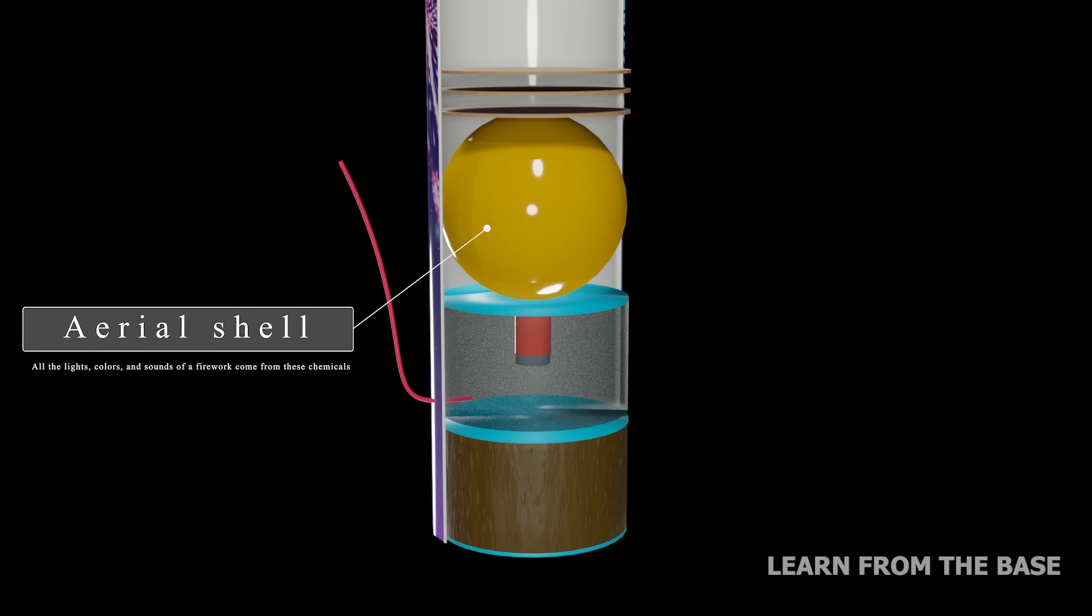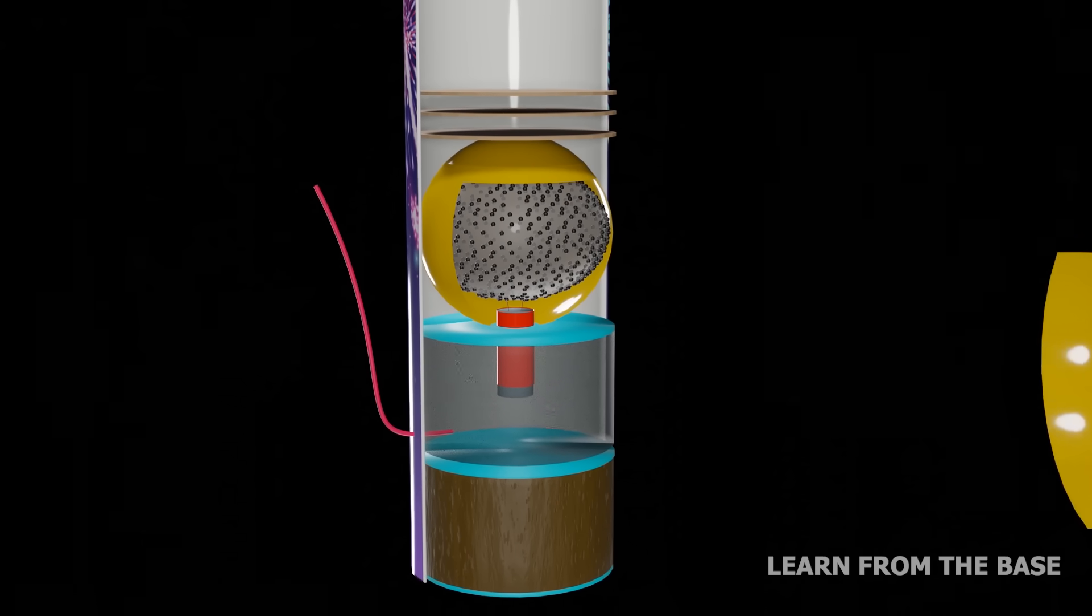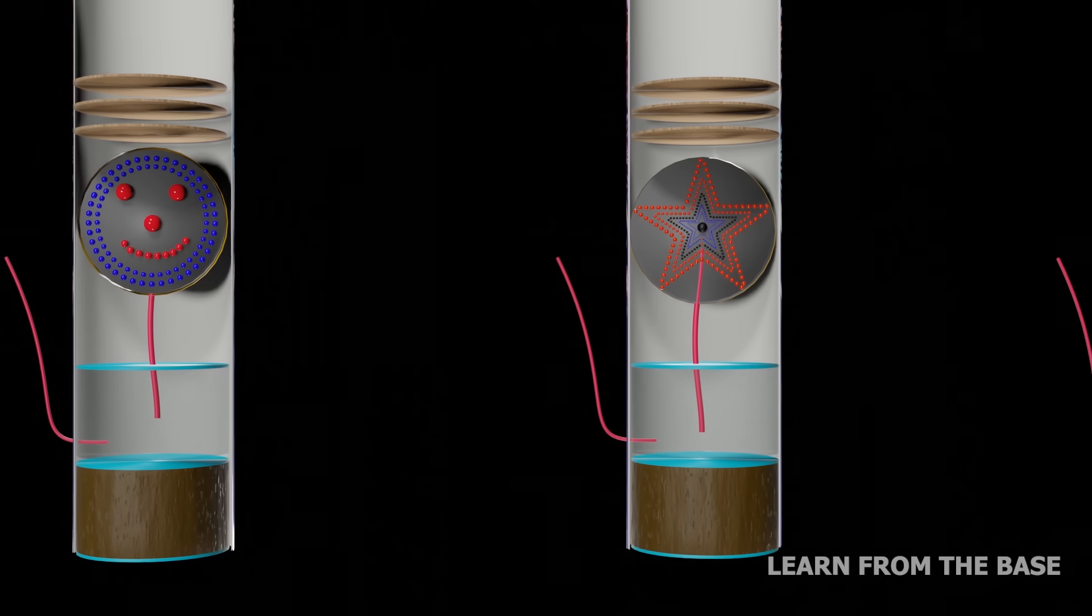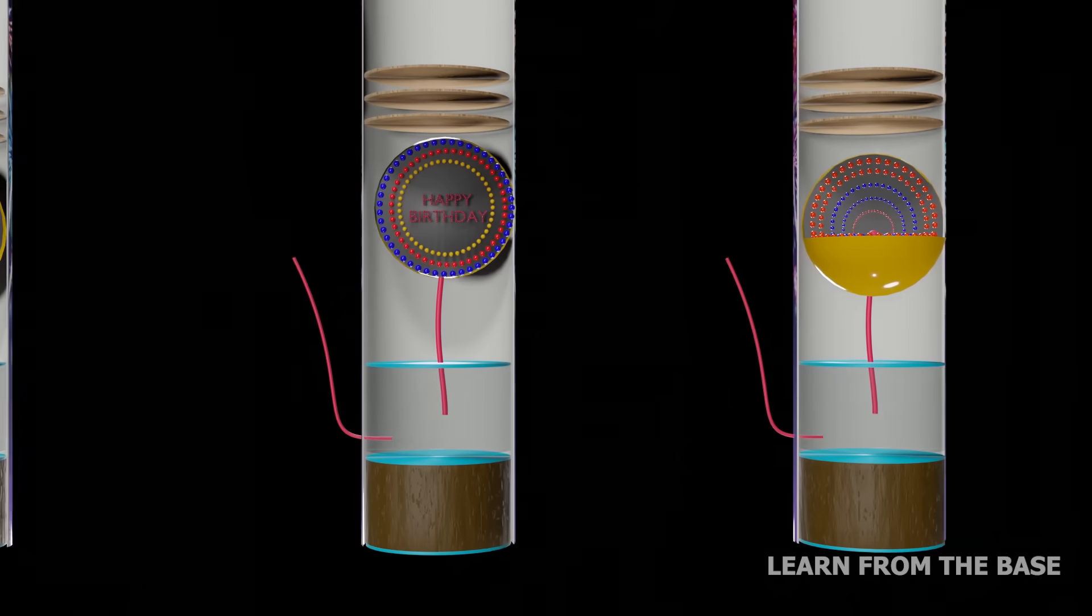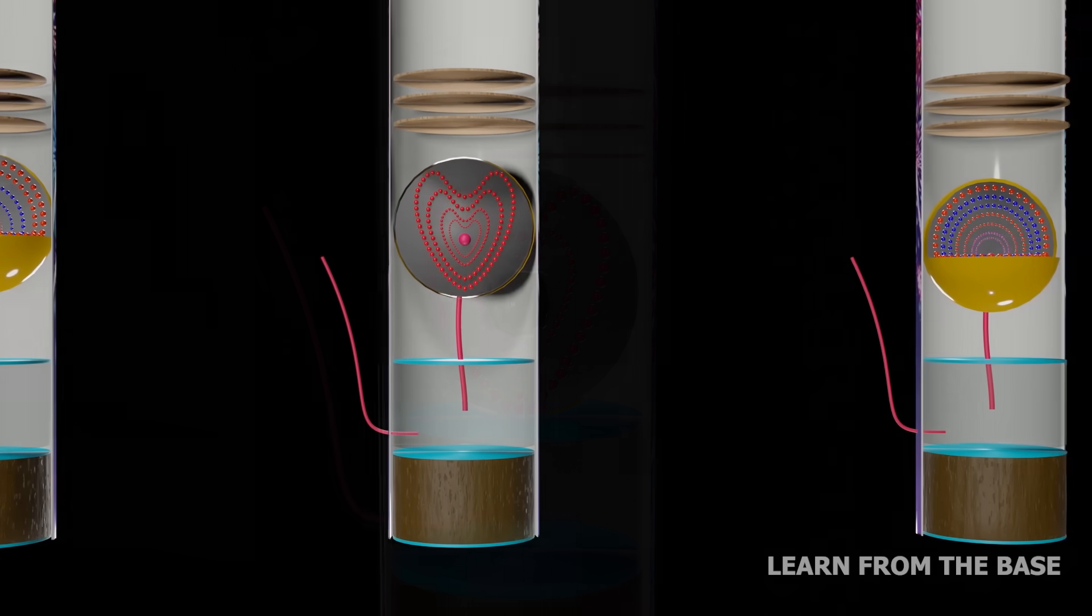This is the main part of the firework, the aerial shell. Inside the aerial shell, the pyrotechnic pellets are arranged in a specific shape that will display when the fireworks explode in the sky. The shape of the firework explosion is based on the pellet arrangement inside the shell.